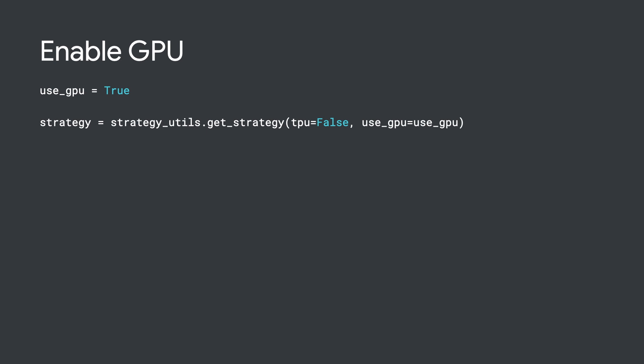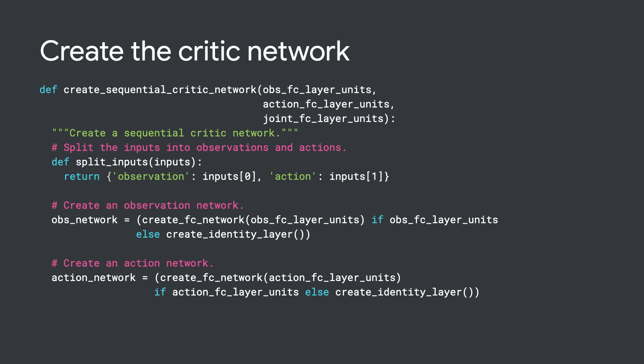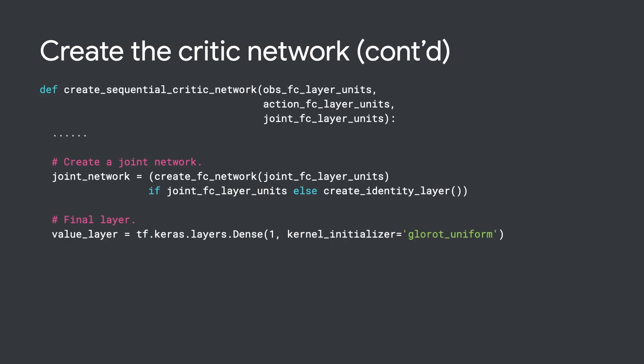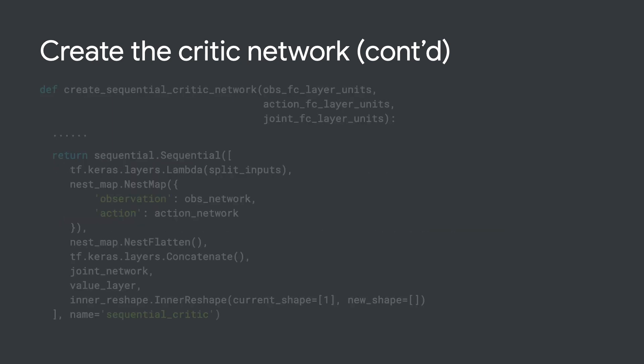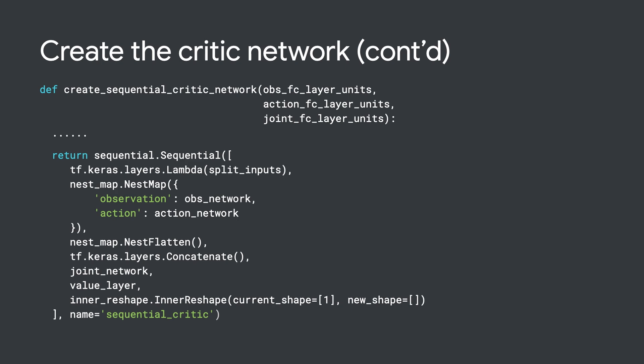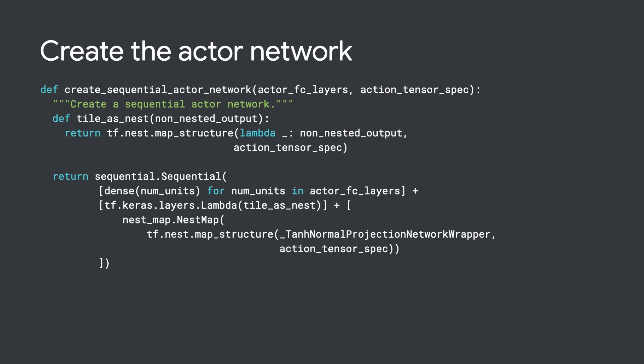We're going to use GPU here, so we set the useGPU flag to true. The SAC agent needs a critic network to predict values and an actor network to predict actions based on the predicted value. Let's create the critic network first. To do that, we create a helper function. The critic network will have an observation network branch and an action network branch. We will merge them and stack a joint network at the top before we output the prediction. Finally, we return the sequential model instance. Similarly, we define a helper function to create an actor network, which predicts actions sampled from a tanh-squashed multivariate normal diagonal distribution. Don't worry about the fancy distribution name here — you can always look it up in our documentation.